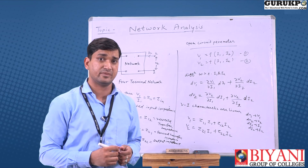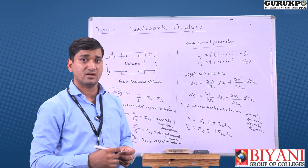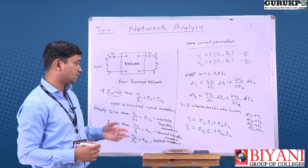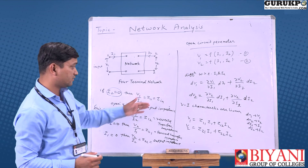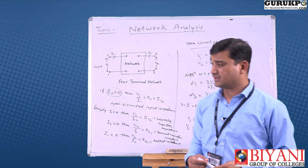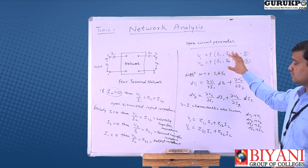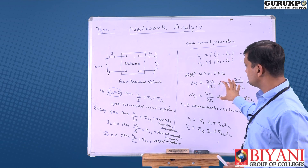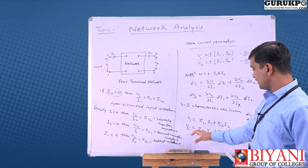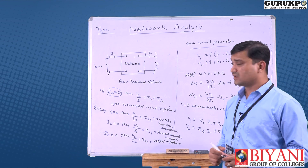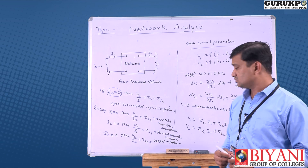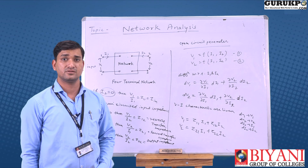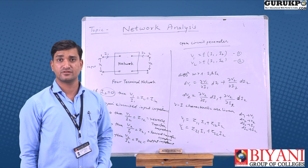So these are known as z-parameters: when the input current is zero in the circuit, it is known as the open circuit parameter, also called the z-parameter. To summarize: voltage is dependent on currents I1 and I2, and by differentiating and setting I1 or I2 to zero we find the z-parameters. Please like, share and subscribe to the YouTube channel gurukpo.com. Thank you very much.